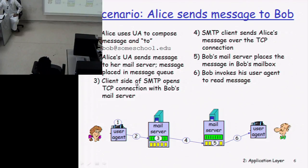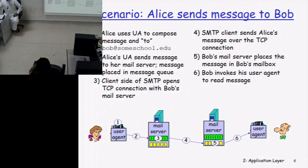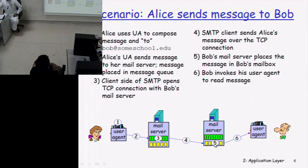At step three, the client side of SMTP opens a TCP connection with Bob's mail server — a TCP connection because mail delivery uses TCP at the transport layer. At step four, the SMTP client on Alice's mail server sends Alice's message over the TCP connection to Bob's mail server, where the message is placed into Bob's mailbox.